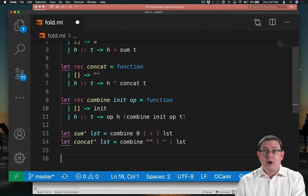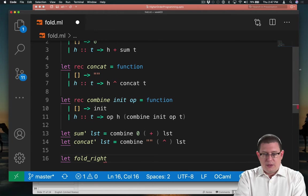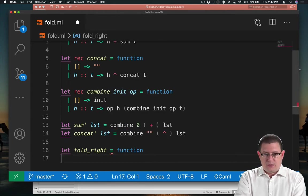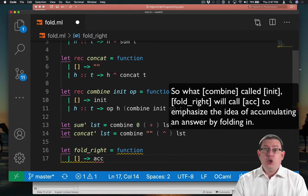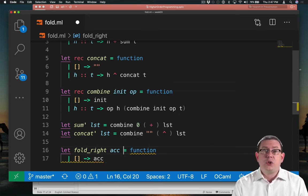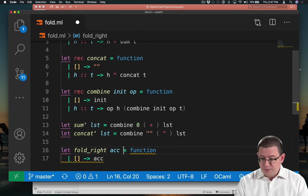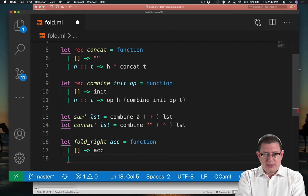We could code that idea up ourselves. Fold right needs to match against a list. If it's the empty list, it needs to return that initial value. We will now start calling that the accumulator. So this is the result that's being accumulated as we go along. And fold right will need to take in that initial accumulator as an argument here. And after pattern matching against the empty list, we can pattern match against a list that is not empty.